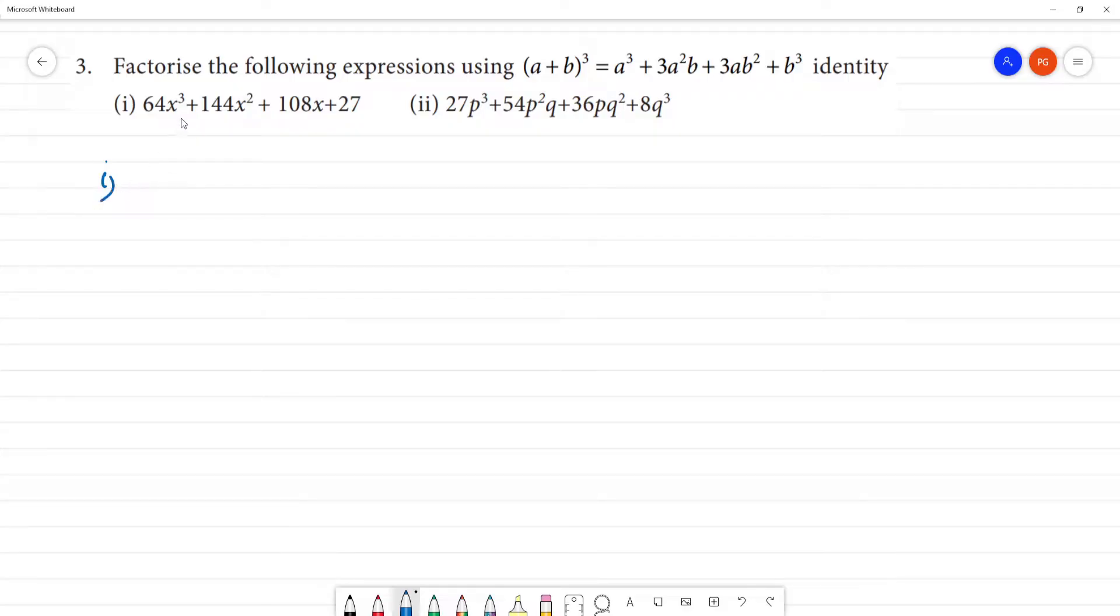So first one, we have 64x³. 64x³ can be written as 4³x³, which can be written as (4x)³.